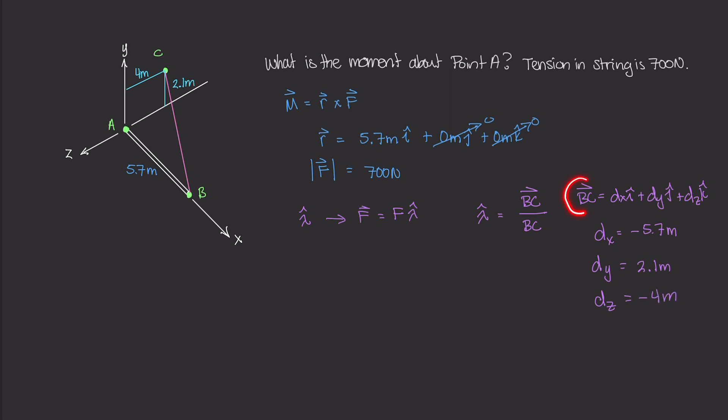So that really gives us BC, the vector BC. Now the magnitude of BC, what we can do is we can take the root sum square of all three of these components, and that should give us d. So in other words, d is dx squared plus dy squared plus dz squared, and then you just take the square root. And all I'm doing is just plugging in these values into this equation. I'm not going to bore you with that algebra, you can try it for yourself. But d turns out to be about 7.2732 meters.